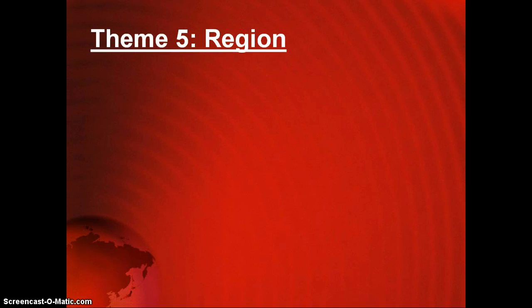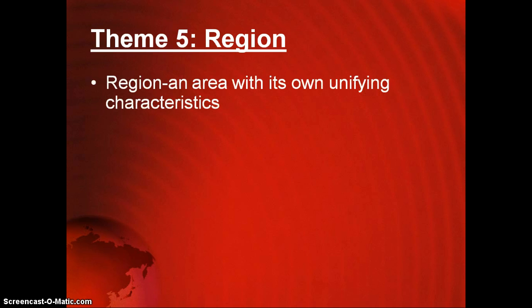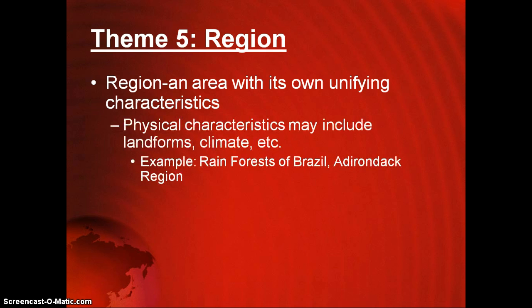Theme number five, the last one, is region. A region is an area with its own unifying characteristics — it may seem very similar to place, so make sure you keep the two separate. You can use many different characteristics to unify a particular area. These might include physical characteristics such as landforms and climates. For example, the rainforests of Brazil, the Adirondack region, and the Finger Lakes region are all identified by their physical characteristics.